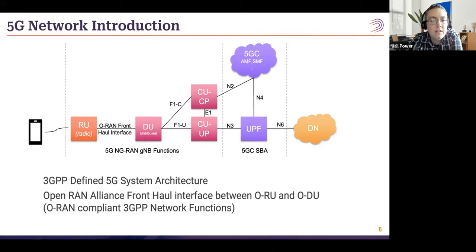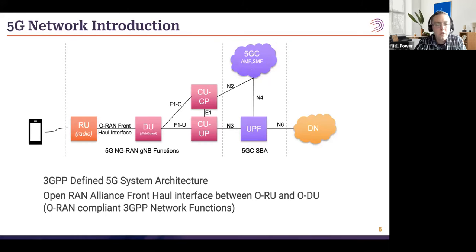The operator — whether Vodafone, Verizon, AT&T, or others — decides whether the CU is split or integrated, and where network functions are located geographically. The DU and RU are typically distributed out at the cell site near the tower. The CU could be distributed or centralized depending on available bandwidth. A centralized CU could service 10 or more DUs, and the UPF could serve many CUs across a large geographical area.